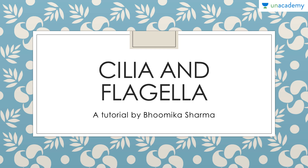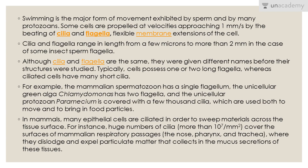Cilia and flagella are important for the movement of the cell. Swimming is the major movement exhibited by sperm and by many other protozoans. Some cells are propelled at velocities approaching 1 millimeter per second by the beating of cilia and flagella, which are flexible membrane extensions of the cell. They range in length from a few microns to more than 2 millimeters in the case of some insect flagella.